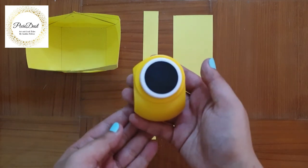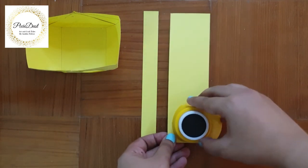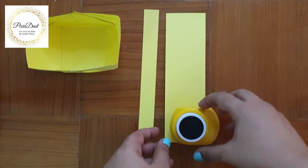I'm using my circle punch to cut out two circles which measure 1 inch diameter.